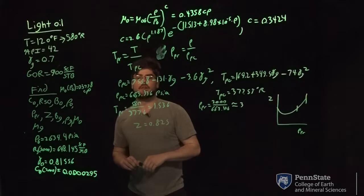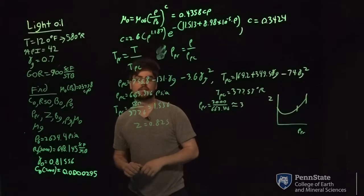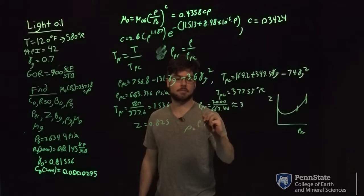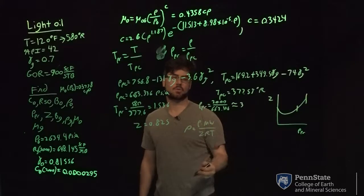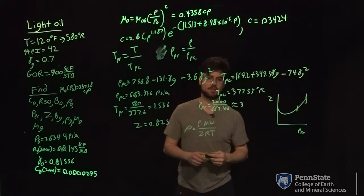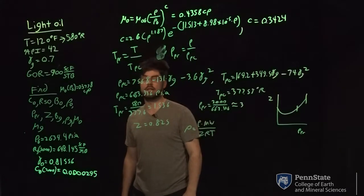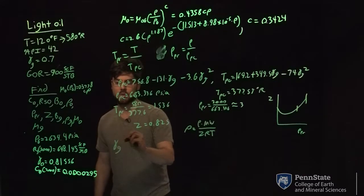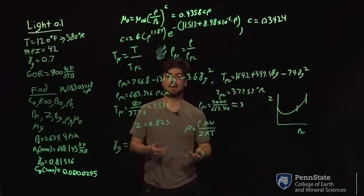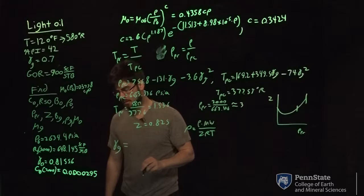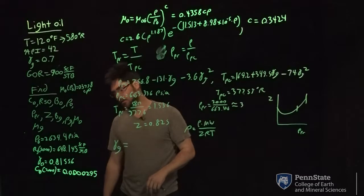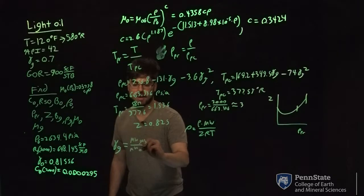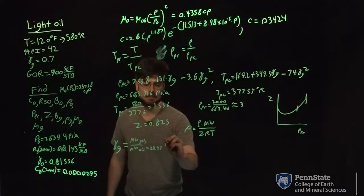This Z factor is used to find gas density. The equation is: density of gas equals pressure times molecular weight of gas, divided by Z times R times T, where T is in Rankine, Z is 0.825, R is 10.73 (a conversion constant), and P is 2,000 psi. Molecular weight of gas is found using specific gravity of gas, which equals molecular weight of gas divided by molecular weight of air (28.97 lb/lb-mole). This differs from liquids, where specific gravity is relative to water density (1 g/cc).